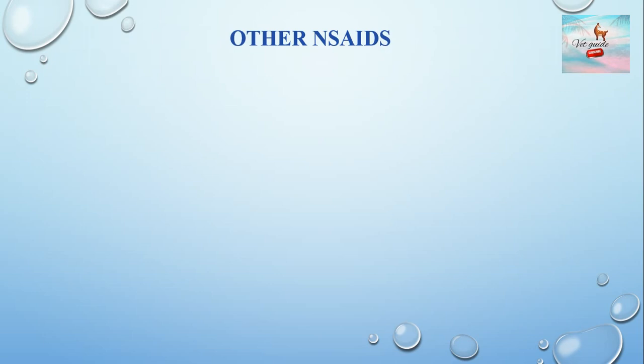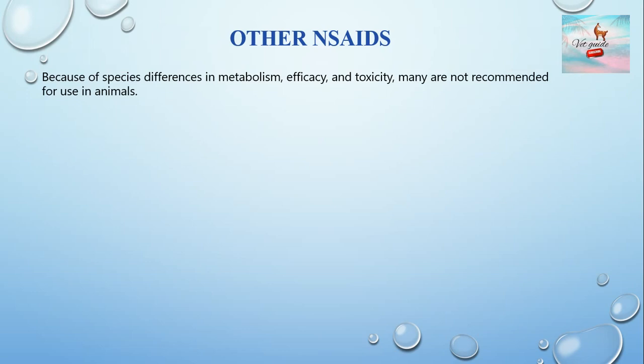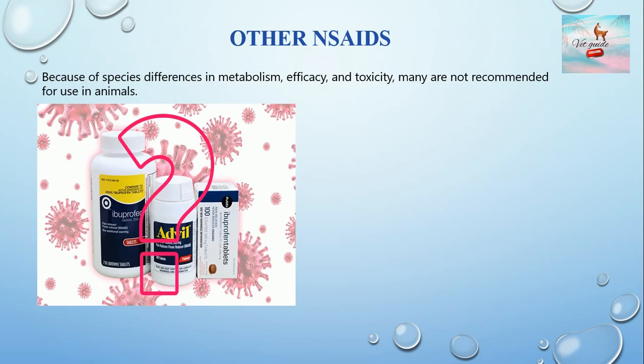A large number of prescription and non-prescription NSAIDs are available for human use. However, because of species differences in metabolism, efficacy, and toxicity, many are not recommended for use in animals. Ibuprofen is an arylpropionic acid derivative used in dogs as an anti-inflammatory drug; however, dogs are much more sensitive to gastrointestinal adverse effects from ibuprofen than people. At therapeutic doses, adverse effects in dogs include vomiting, diarrhea, gastrointestinal bleeding, and renal injury. Ibuprofen is not recommended for use in dogs or cats.